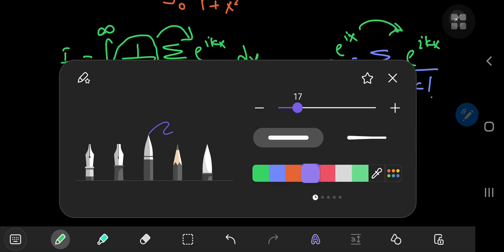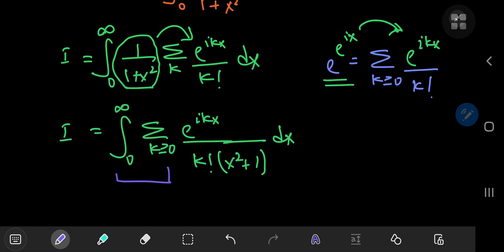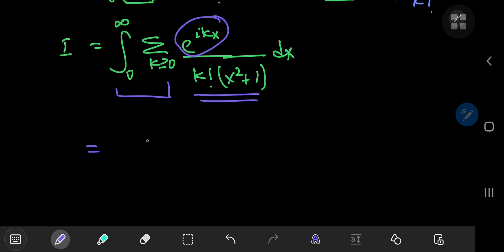Now, can we or can we not interchange these two operators? Can we switch up the summation and the integration operators? Well, that depends on convergence. And up here you have an oscillatory function, right? In complex analysis, this is an oscillatory function. And down here, you have k factorial times x squared plus 1. So, oscillatory over polynomial and factorial. There are no problems whatsoever with convergence. So, you can switch up the order of the summation and integration operations.